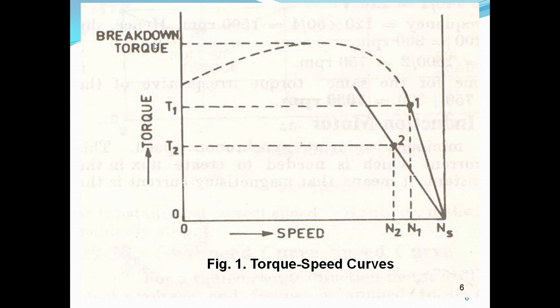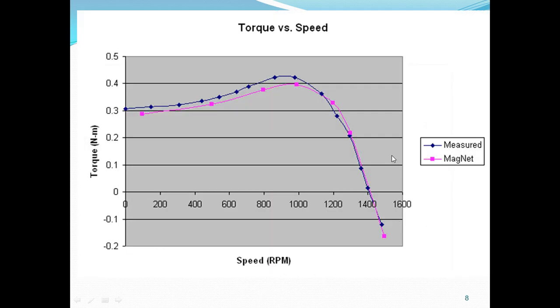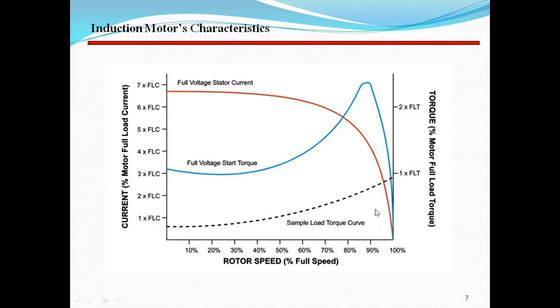The maximum torque is the maximum torque which a motor can withstand. Draw the figure. On the x-axis is speed; on one side of the y-axis is torque and on the other side is current. The blue curve represents full voltage starting torque and the red curve represents full voltage starting current.